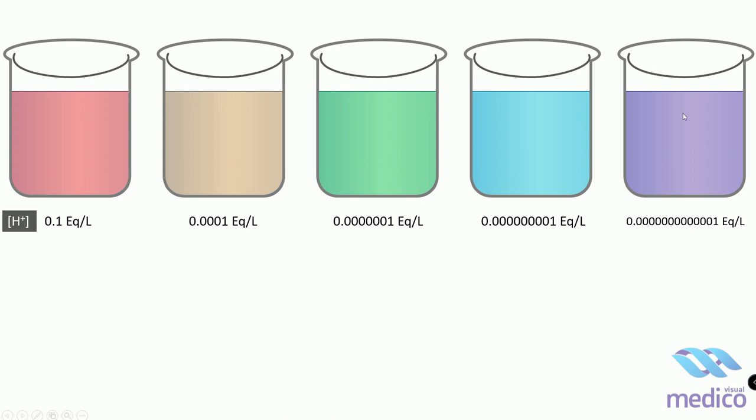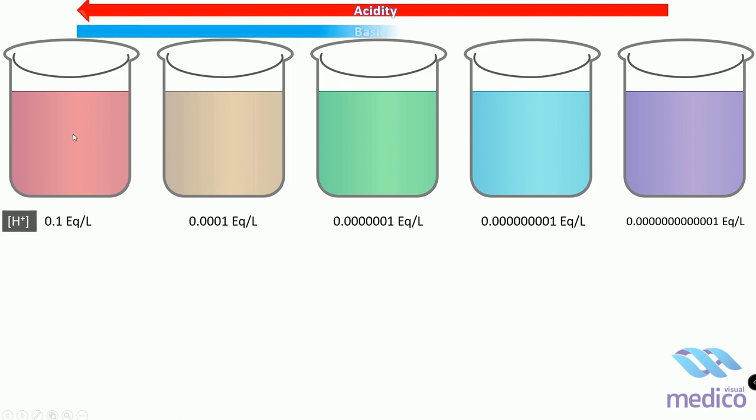This solution among these is most acidic because it has highest concentration of hydrogen ion inside it, while this one is least acidic. Similar to that, this solution is most basic because it has least concentration of hydrogen ion inside it, and this one is least basic because of highest amount of hydrogen ion concentration inside it.